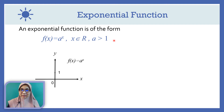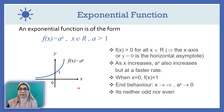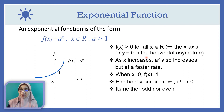An exponential function is of the form f(x) equals a to the power of x, for all x in ℝ, and a is greater than 1. Observe that for all x in ℝ, f(x) is always positive, meaning f(x) is greater than 0. This indicates that the x-axis, or y equals 0, is the horizontal asymptote. As x increases, a to the power of x also increases, but at a faster rate.